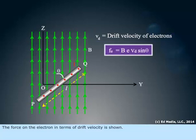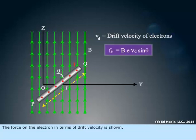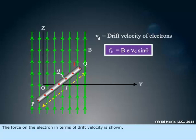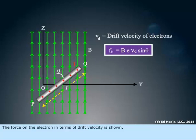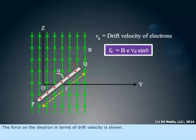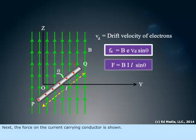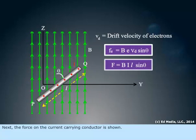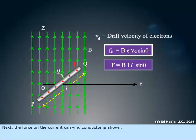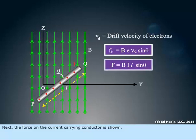The force on the electron in terms of drift velocity is shown. Next, the force on the current carrying conductor is shown.